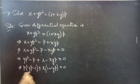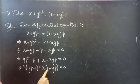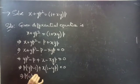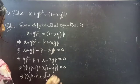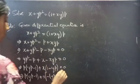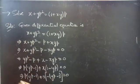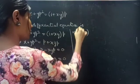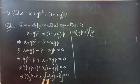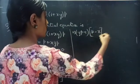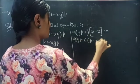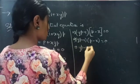Since we have yp minus 1 in the first term, we rewrite x of 1 minus yp as minus x of yp minus 1 by taking minus common. Now we have yp minus 1 in both terms, so we take yp minus 1 common, giving yp minus 1 into p minus x equals to 0.